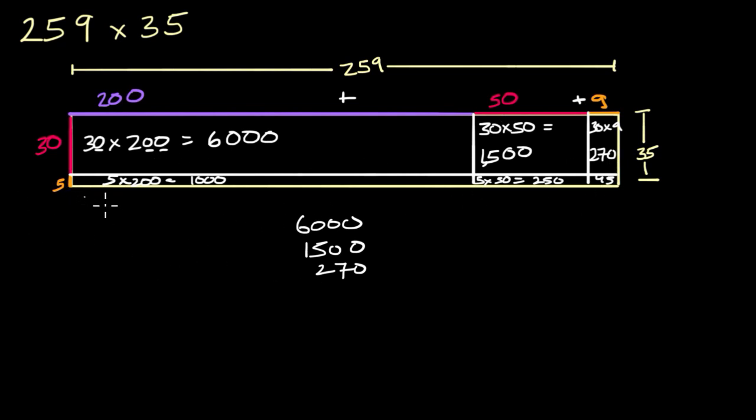But I'm going to keep going. And then I have this 1,000 here, which was the 5 times 200. Then I have the 250 here, and then I have the 45. If I add up all of these partial products, or partial areas, I could say, then I'm going to get the total product or the total area of this rectangle.